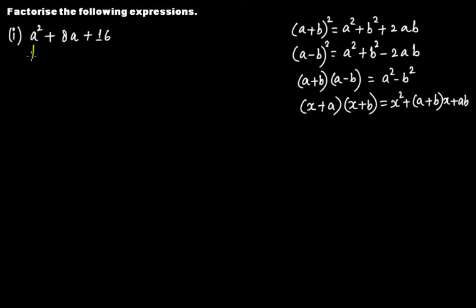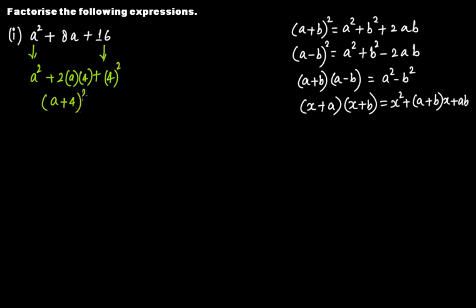For the first expression, a² + 8a + 16: we write 16 as 4², so the expression becomes a² + 2·a·4 + 4². This is of the form a² + 2ab + b², which equals (a + b)². Here b = 4, so the factorization is (a + 4)².